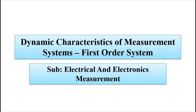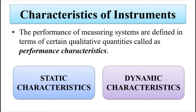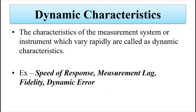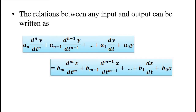We know that the characteristics of a basic measuring system can be divided into two categories: static and dynamic. Static parameters we have discussed previously. Dynamic characteristics such as speed of response, measurement lag, fidelity, and dynamic error we have covered in the previous video. We also learned that the dynamic relationship between the input and the output is represented using differential equations, which obey this general expression.